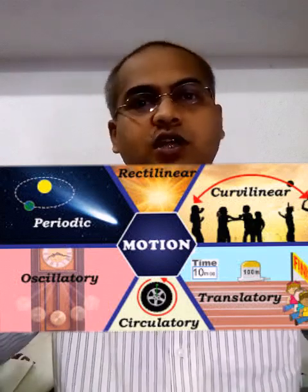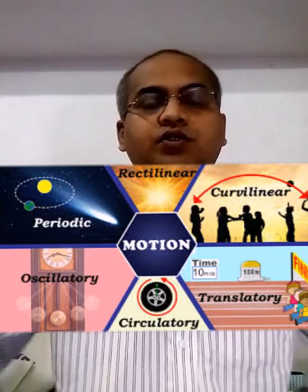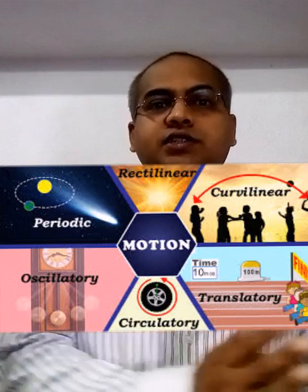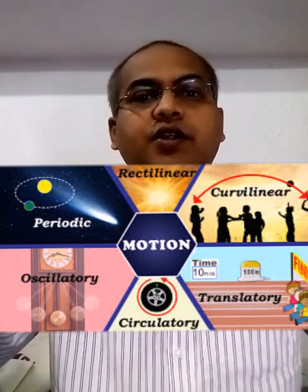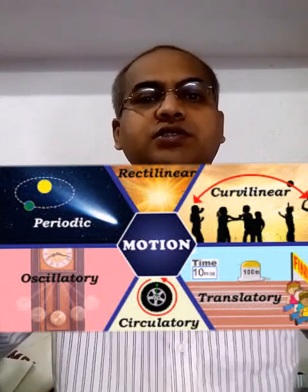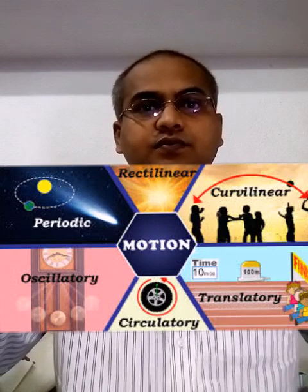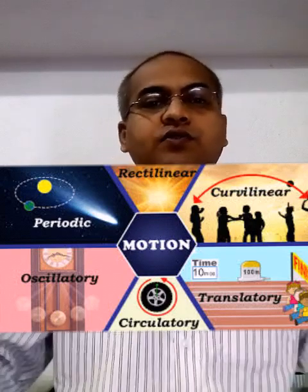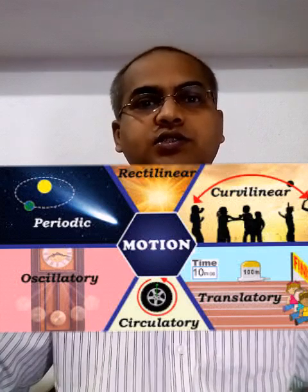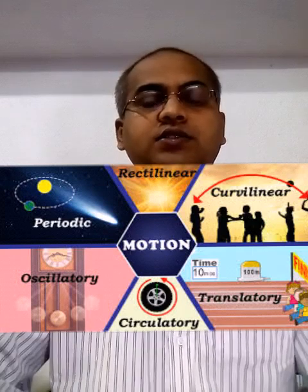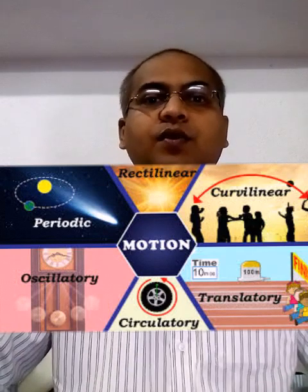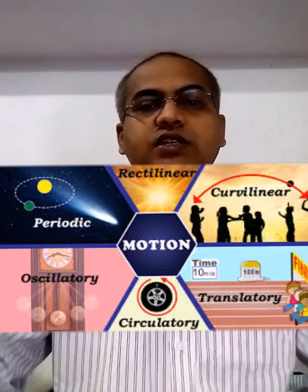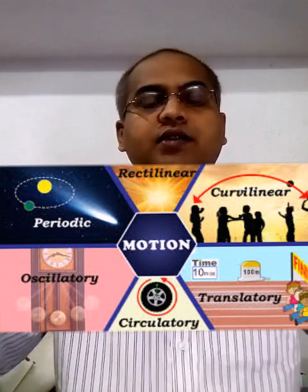By understanding motion and measurement together, we can understand the movement of anything and how it moves. This connects to transport — we cover distances using various types of transport. So motion, measurement, and transport are all connected. This is how the chapter ends. I hope you all understand. If you have any problems, ask me — we will revise this chapter again. Thank you, class. Have a great day and be safe at home.